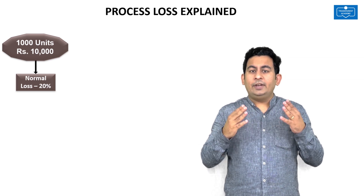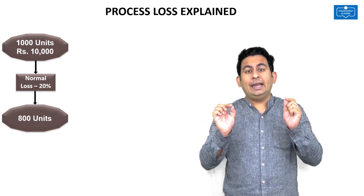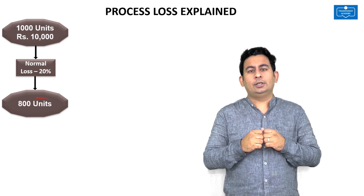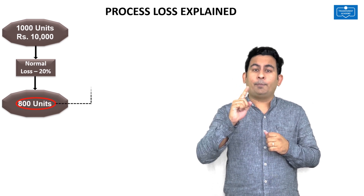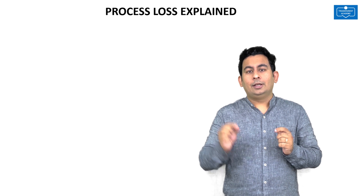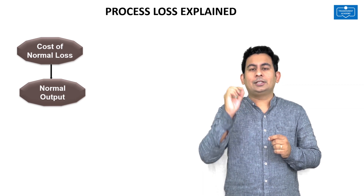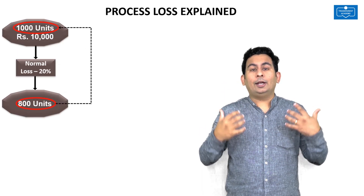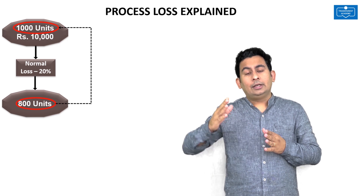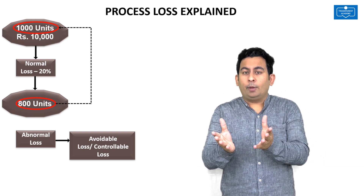This means when we introduce 1000 units, our normal output is going to be only 800 units. This also implies that a customer who wants to buy these 800 units will have to bear the cost of processing the 1000 units. This brings us to the conclusion that the cost of normal loss should be borne by the normal output — in this example, the 800 units should bear the cost of processing 1000 units.